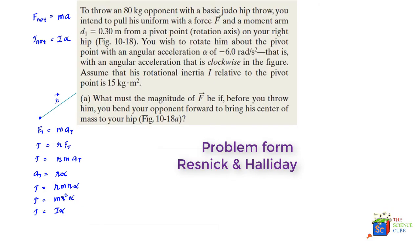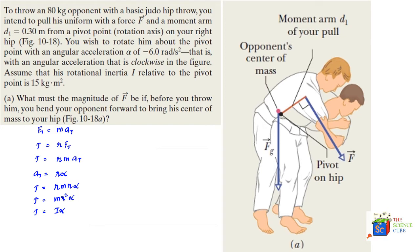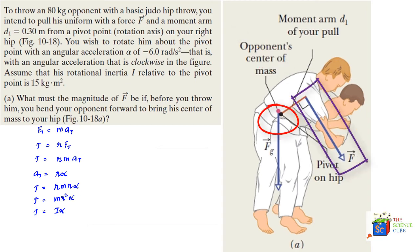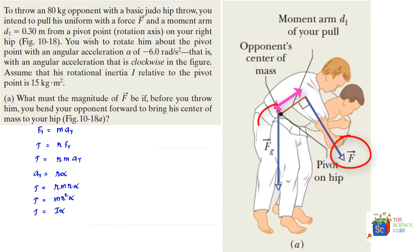The problem from Resnick-Halliday involves two judo fighters — this is the opponent and this is you. To throw an 80 kg opponent with a basic judo hip throw, you intend to pull his uniform with a force f and a moment arm d1 = 0.3 meters from the pivot point, which is the rotation axis on your right hip.